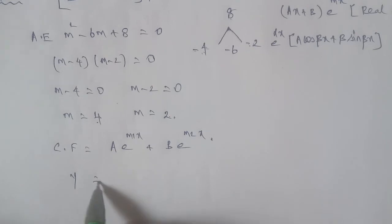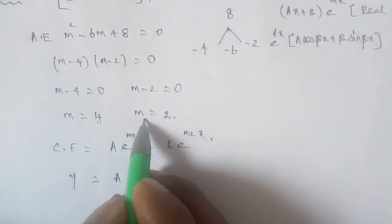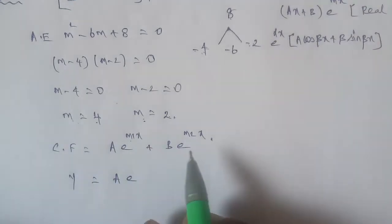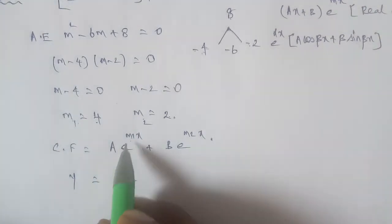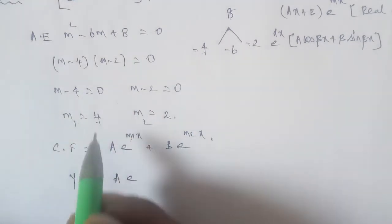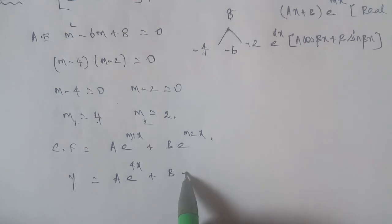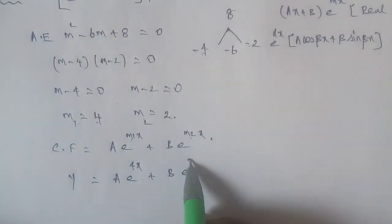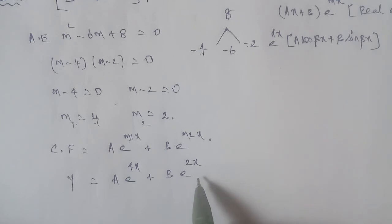Since m₁ and m₂ are real and different, we use the first formula. The general solution is y equals A·e^(4x) plus B·e^(2x), where m₁ equals 4 and m₂ equals 2.